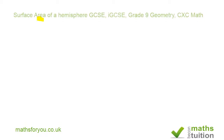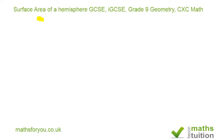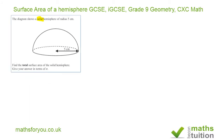Hello and welcome to this exercise on finding the surface area of a hemisphere. It is from a past GCSE question paper — paper 1, which is without a calculator. Now what to note here is that the question says the diagram shows a solid hemisphere of radius five centimetres. The operative word here is solid.